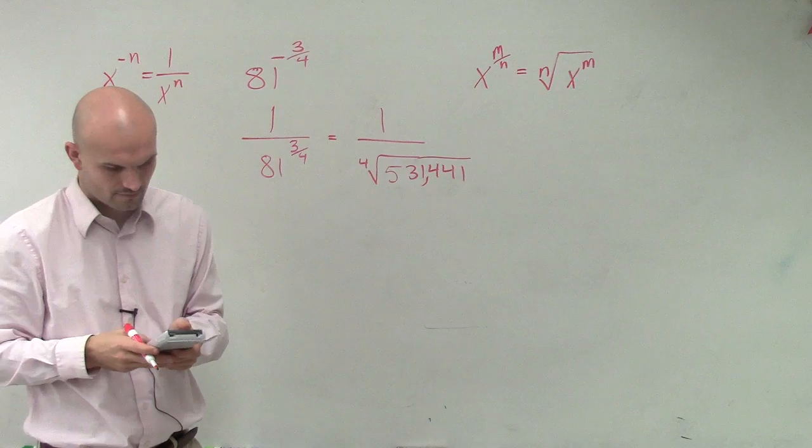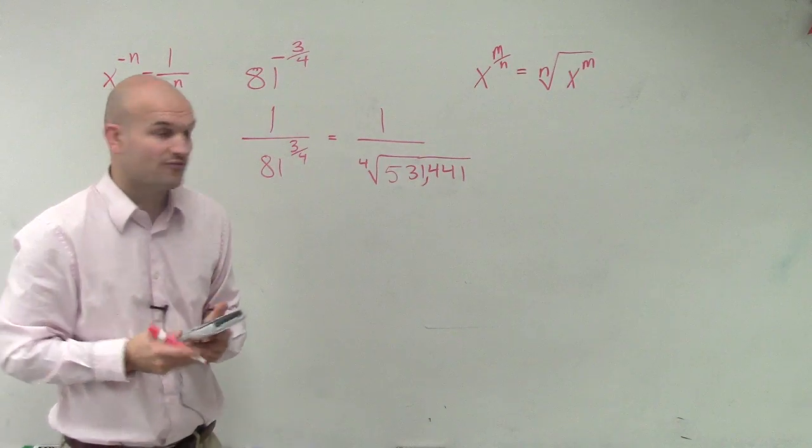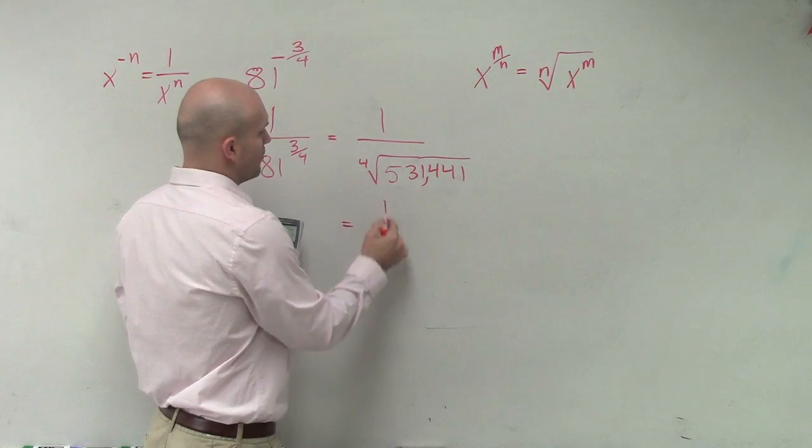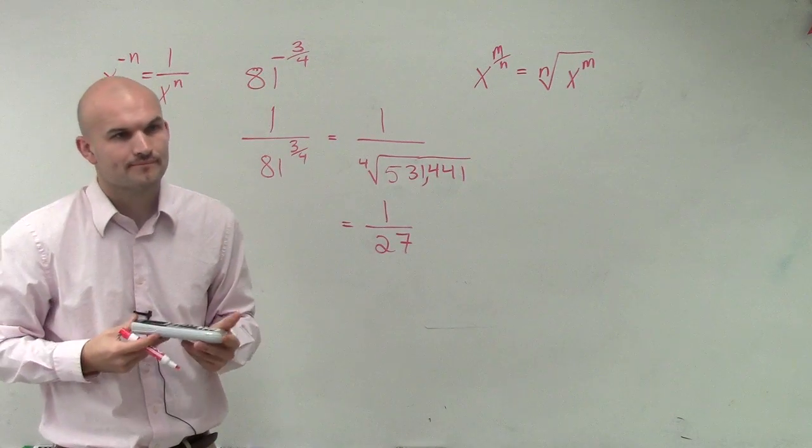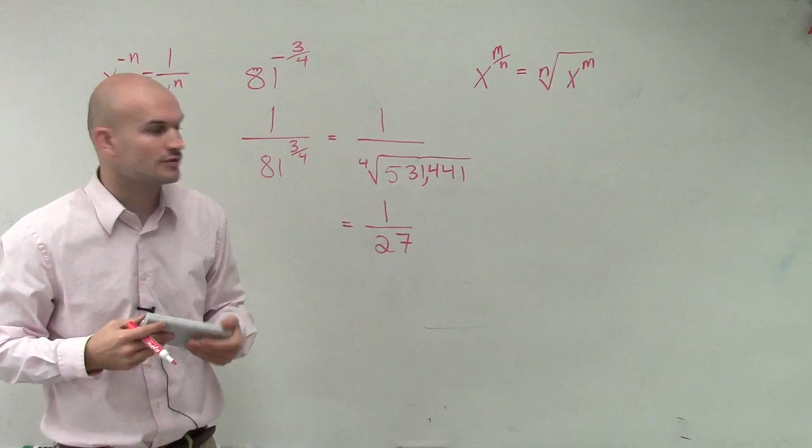It's 27. And when you take the fourth root of that, you end up getting 1 over 27. OK? So you can simplify it. I'll go through that.